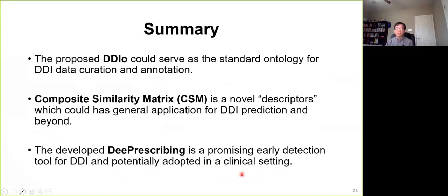So in summary, our approach provides you three types of information. First one, drug-drug interaction ontology, which could serve as a standard ontology for drug-drug interaction data curation and data annotation. The second one, we provide you a composite similarity matrix. This kind of novel descriptor, which not only can be used for drug-drug interaction prediction, we can use for others such as drug combination and drug repositioning applications. Finally, we propose our DeepPrescribing model, an AI-powered model. It's a promising approach for early detection of drug-drug interactions, and also has great potential for adoption in clinical settings.